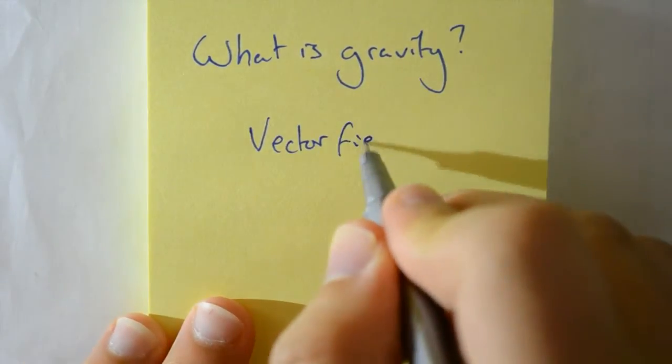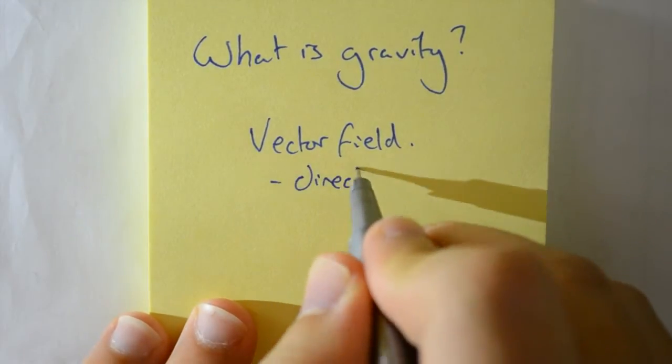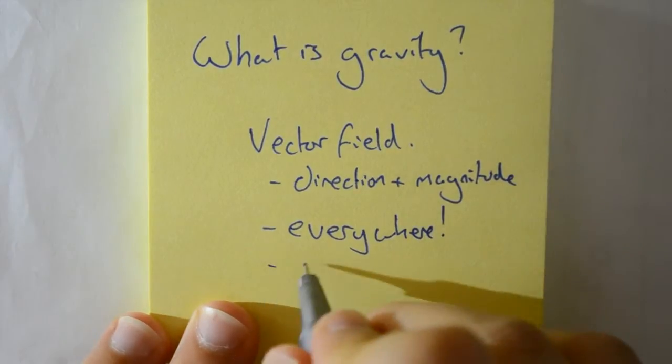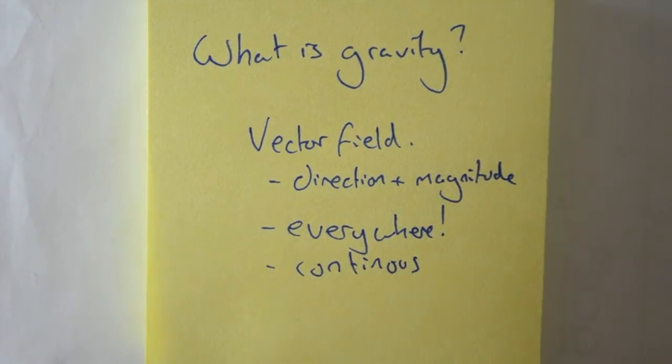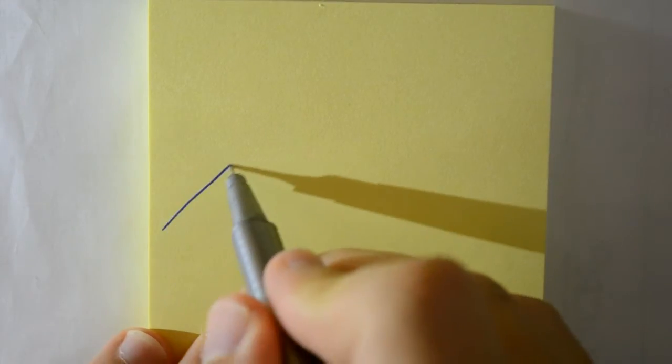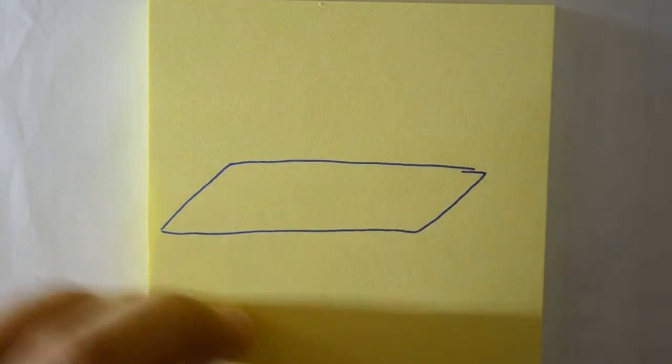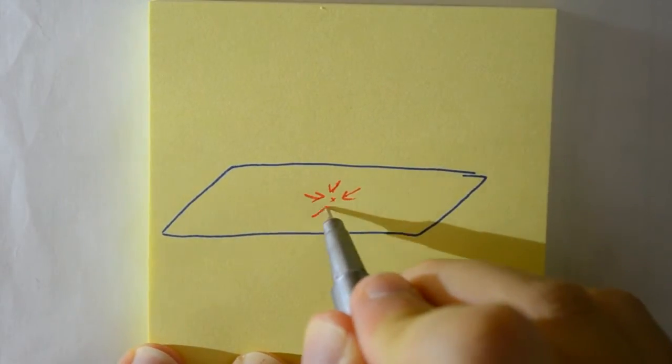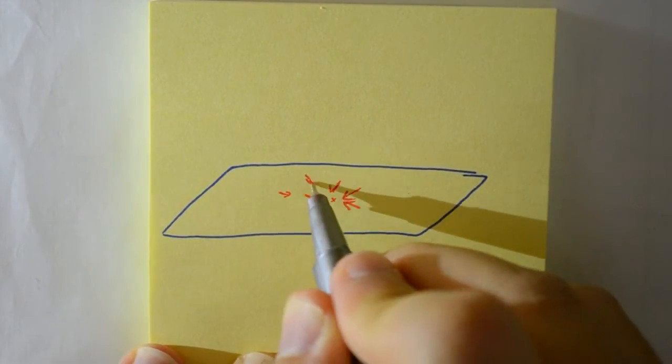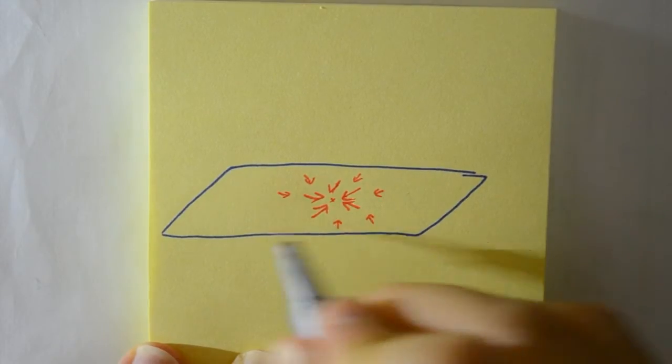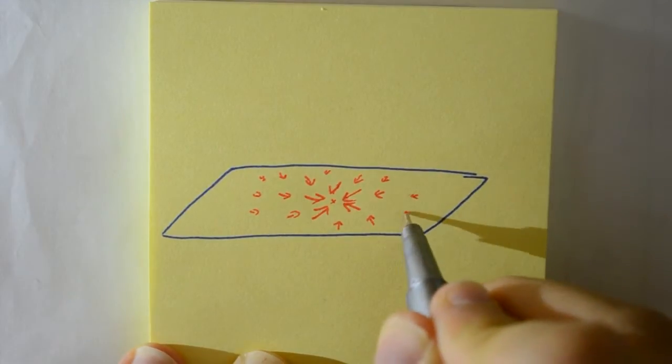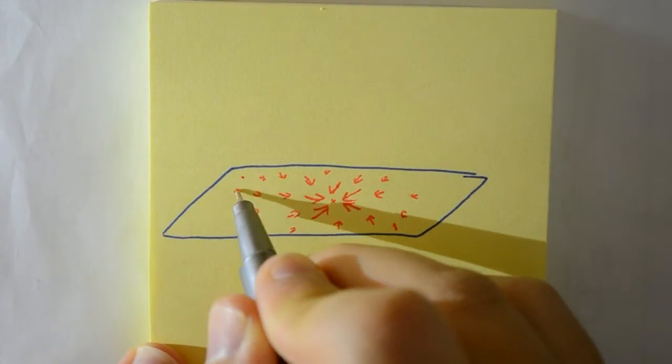We can think of gravity as a vector field. In physics, a field is something which has a value at every single point that's in range. And a vector means this value also has a direction with it. The most common way to think of and represent these vector fields is to imagine you have a sheet which represents space. And then at every point, you have an arrow drawn on it. The direction of the arrow is the way in which the force is directing, and the size of the arrow is how strong the force is at that point.